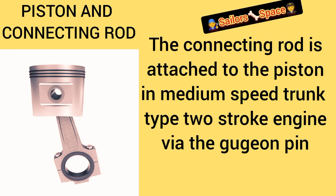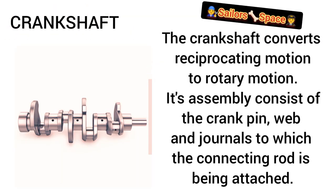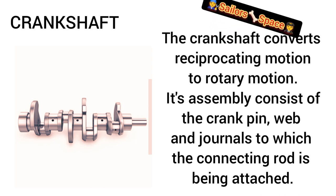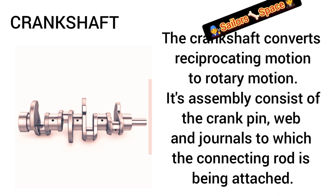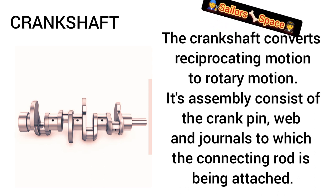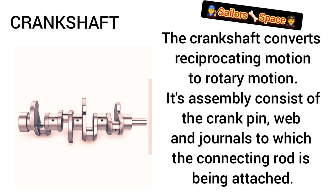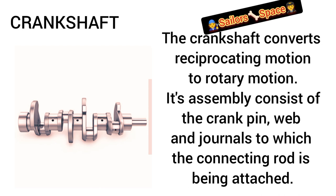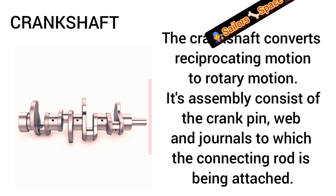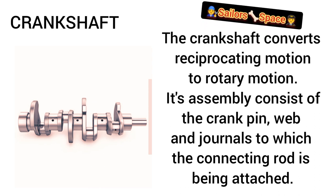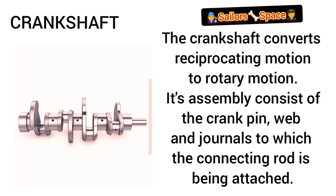Now we'll move to the crankshaft, which is a very important component in any engine, especially the two-stroke engine. The crankshaft converts the reciprocating motion of the piston in the engine cylinder into rotary motion. The crankshaft consists of the crank webs, the crank pin, and the crank journal, and the connecting rod is attached to it. It is not just a straight piece — it has divisions to enable the attachment of the connecting rod.